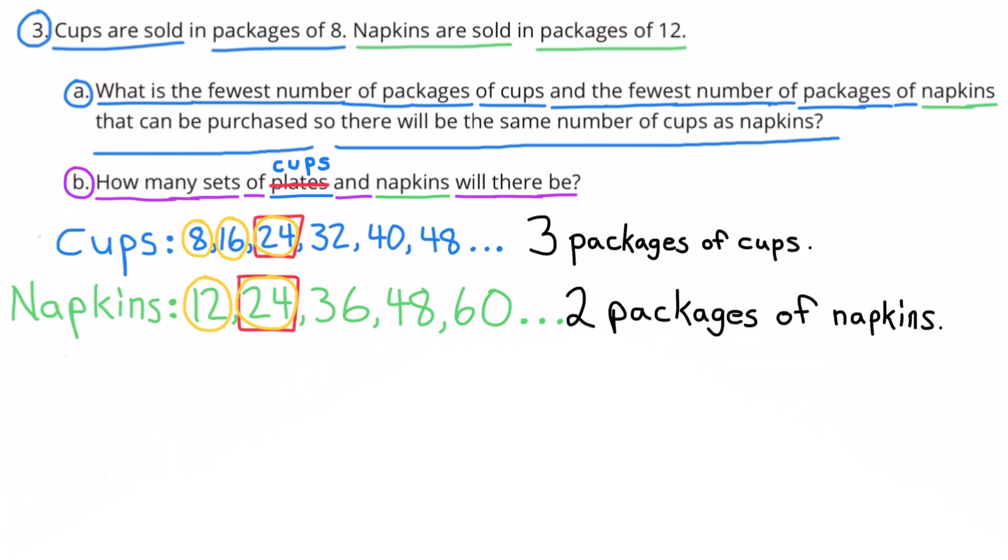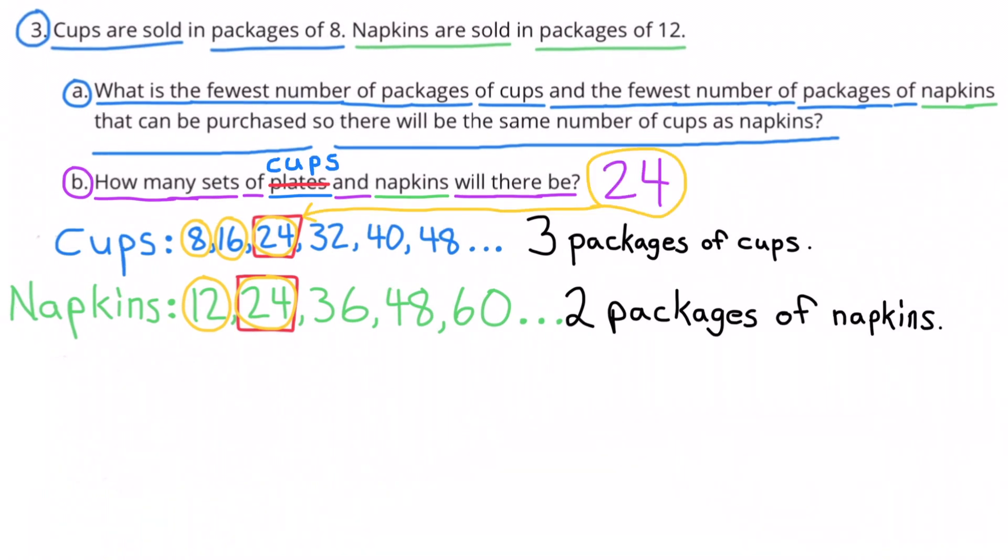B. How many sets of cups and napkins will there be? Originally the word was plates but I crossed it out and wrote cups because we're talking about cups and not plates. There will be 24 sets of cups and 24 sets of napkins.